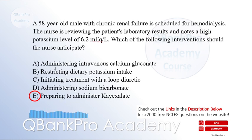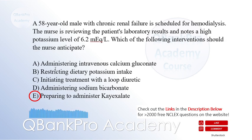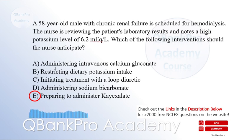Explanation: Hyperkalemia is a common electrolyte imbalance in chronic renal failure due to impaired potassium excretion. K-exalate, a cation exchange resin, helps remove excess potassium from the body by exchanging sodium ions for potassium ions in the intestine, facilitating potassium elimination through the stool. Intravenous calcium gluconate, option A, is used to counteract the effects of hyperkalemia on cardiac conduction but does not address the underlying potassium imbalance.